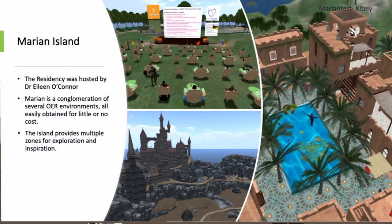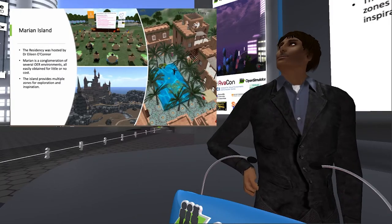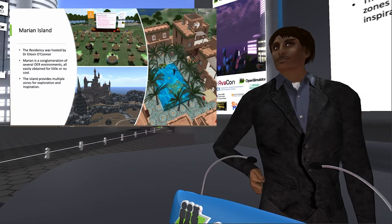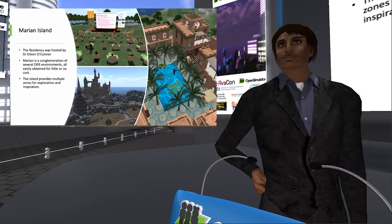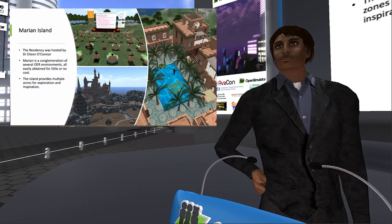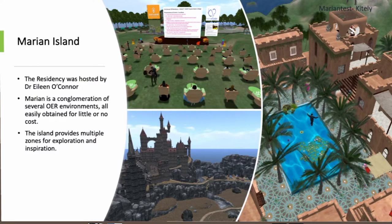We host our residencies on Marion Island, which is owned by Dr. Eileen O'Connor, the program director for the MALLET program, who is following me in the next presentation. Marion Island is one of the larger grids — a 16x16 — and will host up to 80 people. As Dr. Eileen points out, she is a scientist, not a designer, so her island is an agglomeration of OER resources gathered over her 10 years in virtual reality, creating really interesting little vignettes. The island provides multiple zones for exploration and inspiration — a desert oasis, a fabulous crusader castle, and an auditorium space.